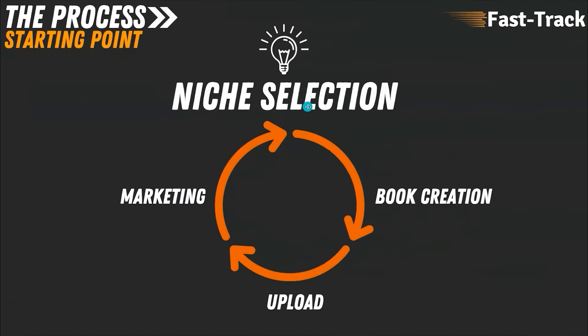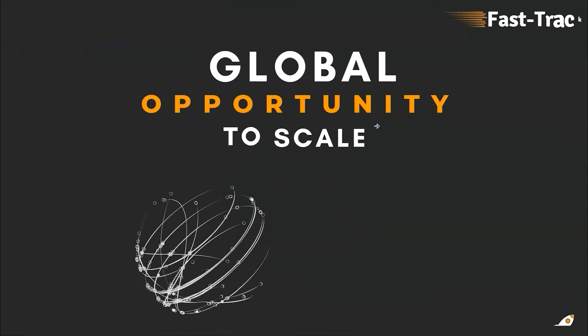The process is: complete your niche selection and research, then go through book creation. Once ready, upload the file types to Amazon Kindle Direct Publishing, then do the marketing. Hopefully you get great sales and reviews, get into the Amazon algorithm, and when a customer searches for your book it comes up, generating more sales. What I love about this business is it has global opportunity to scale. One book can be converted to a paperback, hardback, e-book, and audiobook, then converted into multiple languages and sold across the world on multiple platforms, creating a passive income stream.